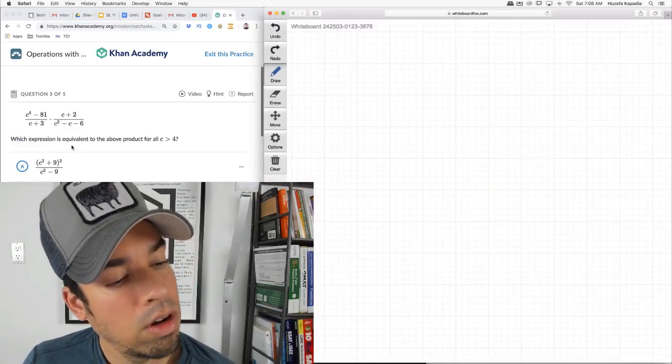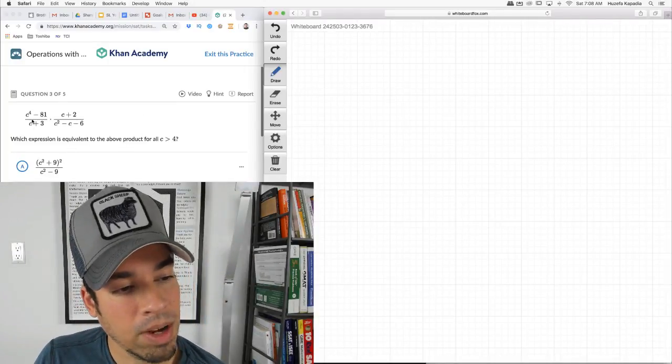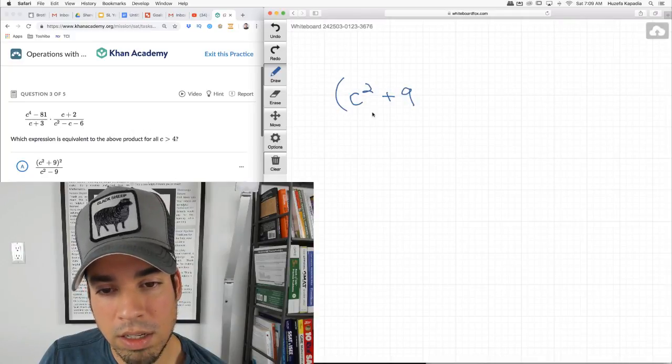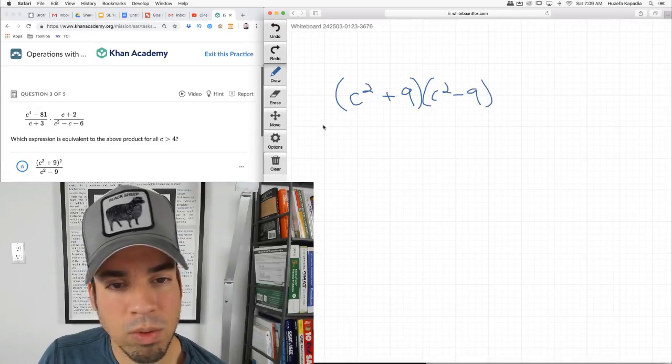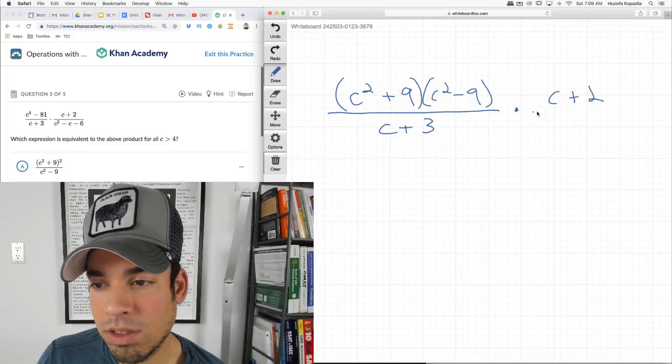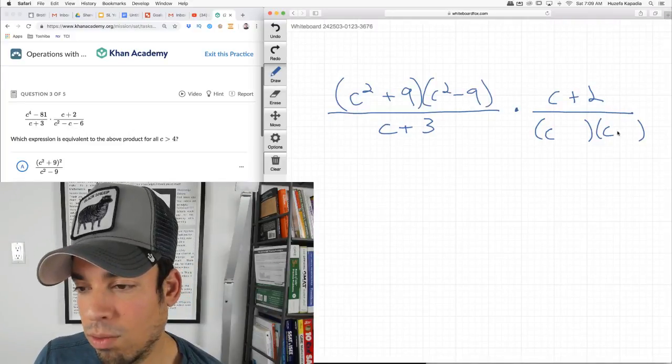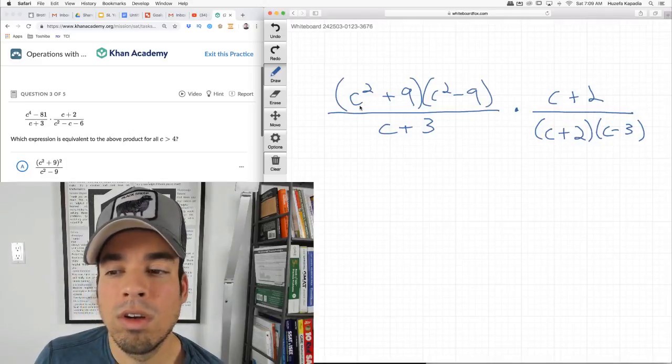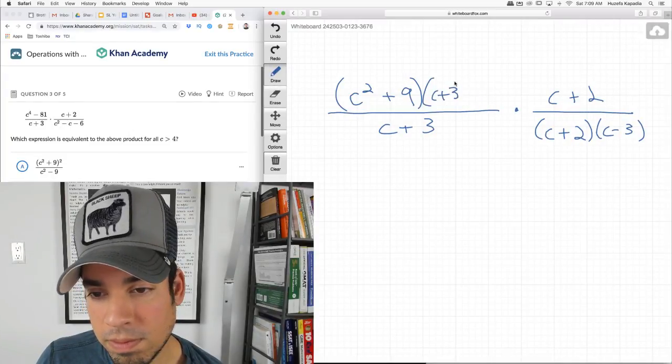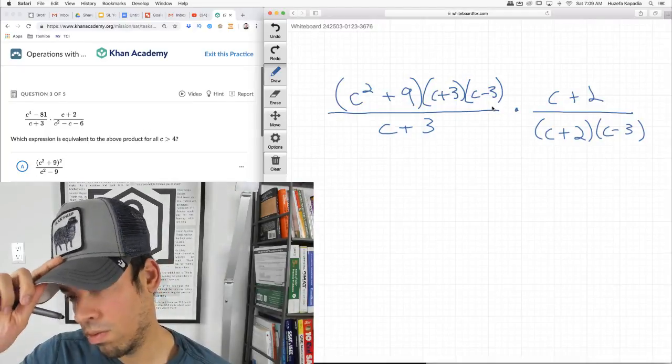Okay, three more. Which expression is equivalent to the above product? Same thing. Factor, factor, factor. This is a difference of squares. So it's c squared plus 9 times c squared minus 9. This can be factored again, over c plus 3. Times c plus 2 over c squared. What multiplies to negative 6, adds to negative 1? Negative 3 and positive 2. Now let's factor this guy again. So c squared minus 9 is c plus 3, c minus 3. Now it's fully factored.